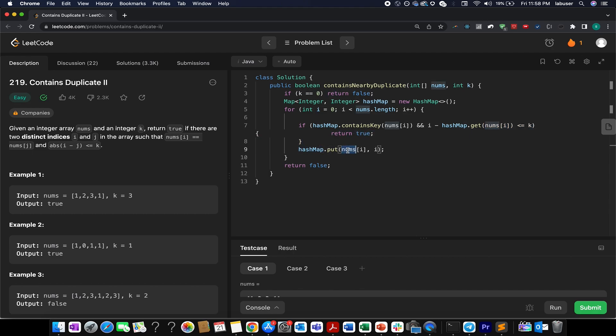Otherwise, we update our hash map. We update the value of nums[i] to i. So this represents the index, this represents the value. Once we are out of this for loop, that means the true condition was never seen. We simply return false because there was never a case where both these conditions were met.